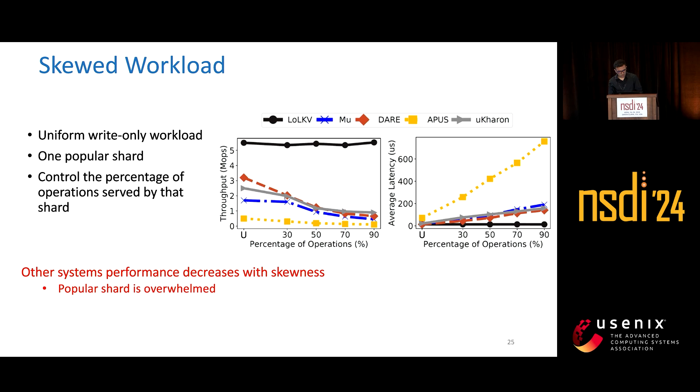From the figure, as the popular shard gets more popular, the throughput of all other systems decreases and the latency increases because the popular shard is overwhelmed. But in LOLKV, as we have multiple threads to serve the popular shard, our throughput is maintained as well as the latency. LOLKV efficiently handles skewed workloads.